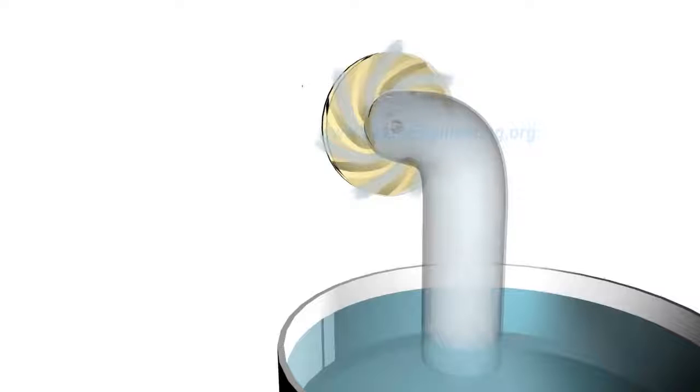This is the reason why priming is important for centrifugal pumps. If no water is present initially, the negative pressure developed by rotating air at eye of impeller will be negligibly small to suck fresh stream of water.